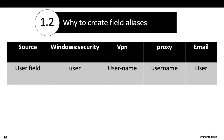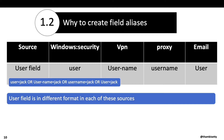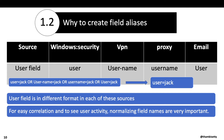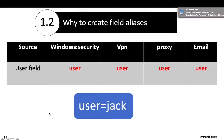Why do you create field aliases? Assume you have Windows security, VPN, proxy, and email logs. You have a common field 'user' across all these sources, but the user field is in a different format in each source. If you want to see user activity across all sources you currently have to write a complex Splunk search. It would be nicer to get user Jack's activity from all sources by simply typing 'user=Jack.' For easy correlation and to see user activity, normalizing field names is very important. If we alias these fields to 'user,' we can write the simple search 'user=Jack' and it will return Jack's activity from all sources.